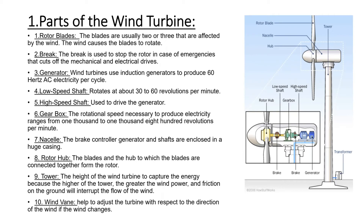The higher the wind turbine tower, the more energy it can capture, because the greater the height, the greater the wind power. Obstacles on the ground interrupt the flow of wind. The last part is the wind vane, which helps adjust the wind turbine with respect to the direction of the wind when the wind changes direction.